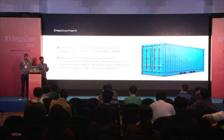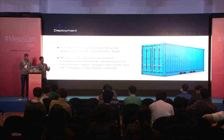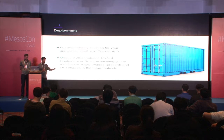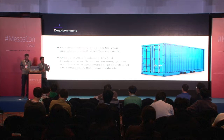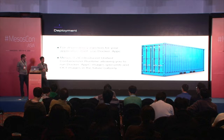With Mesos 0.28, we introduced a cool concept called a unified containerizer that allows you to run Docker and AppC images natively — meaning without a dependency on the Docker daemon or the Rocket runtime. You can just use Mesos 0.28 to launch Docker images. You no longer have to face the instability that gets posted in the community about Docker not being stable.